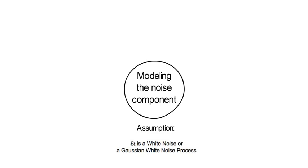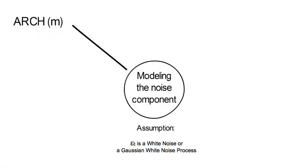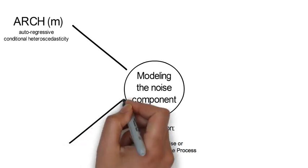As the volatility of epsilon t tends to cluster in financial data, we learn to model epsilon t with the ARCH framework. That stands for autoregressive conditional heteroscedasticity.